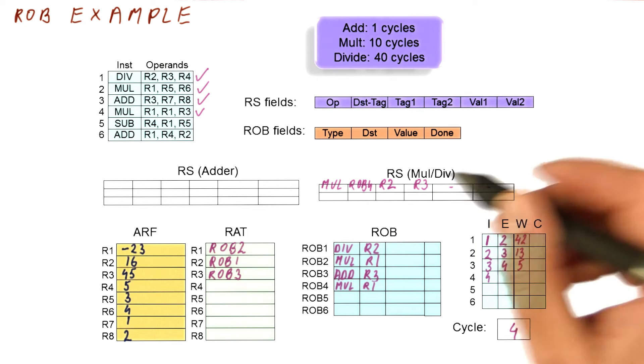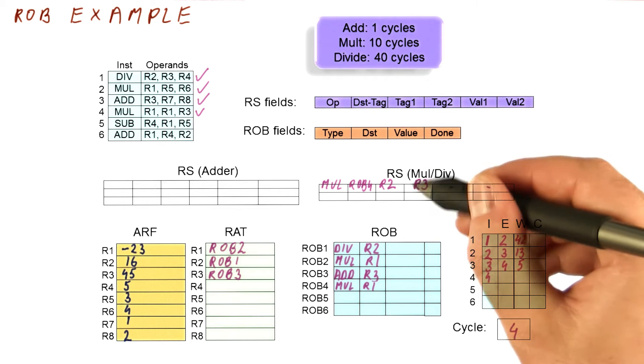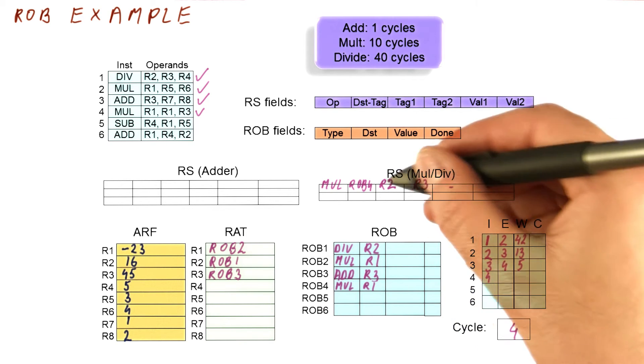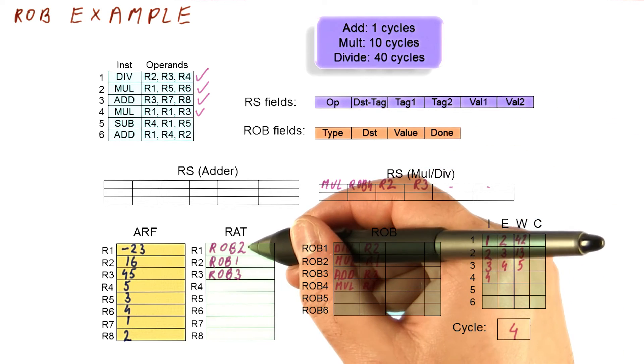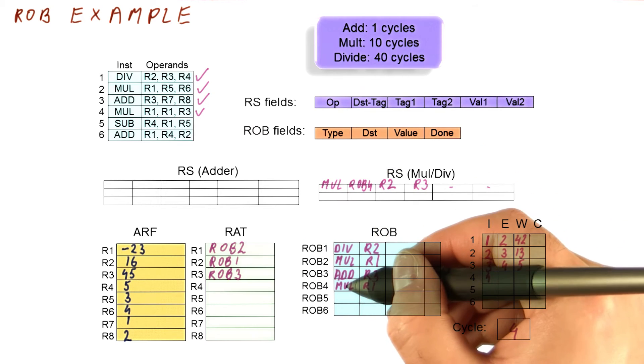It will not be able to dispatch now because it's actually waiting for rob2 and rob3. I'm not writing it out because it would be too crowded. And after we have read these from the RAT, we are ready to update the RAT, r1 now needs to point to rob4.